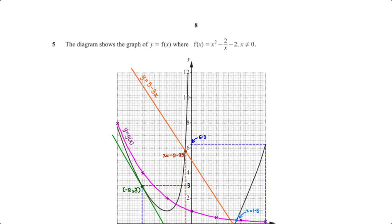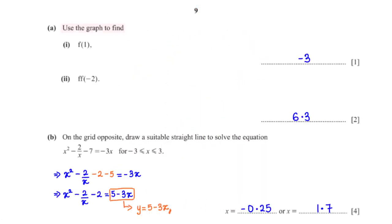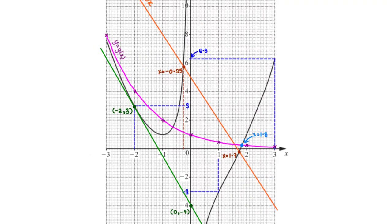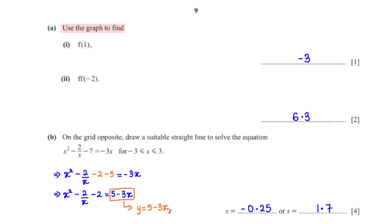The diagram shows the graph of y equals f(x), where f(x) = x² minus 2 over x minus 2, where x cannot equal 0. Use the graph to find f(1). f(1) is the y value when x equals 1; on the grid, mapping x = 1 gives y equals negative 3.